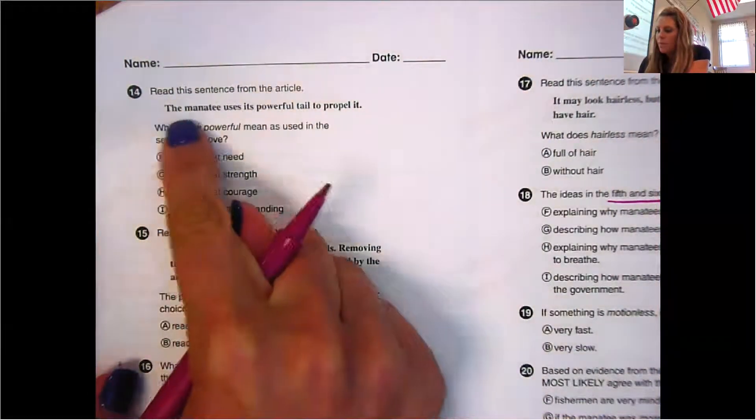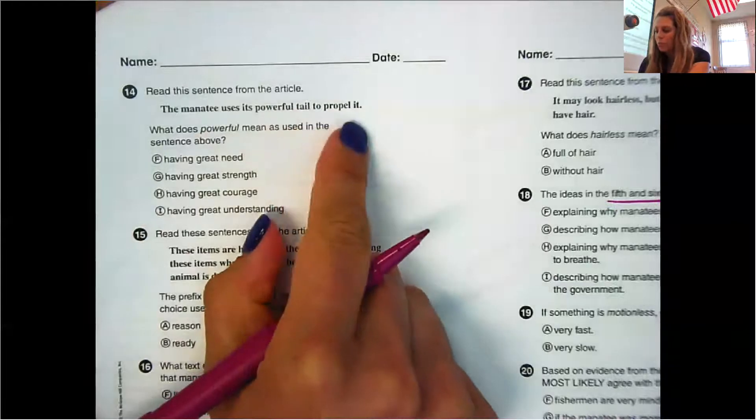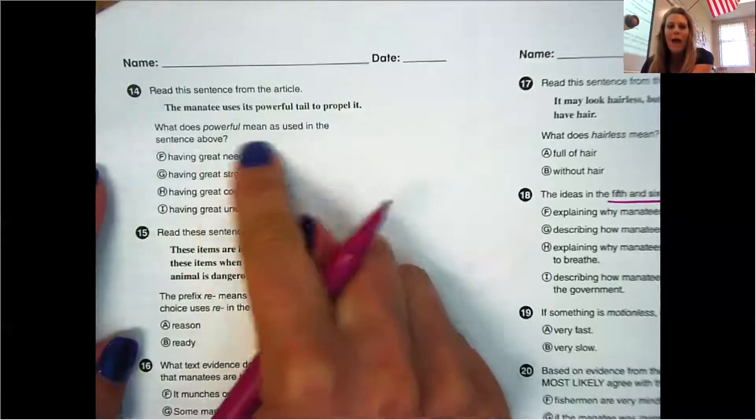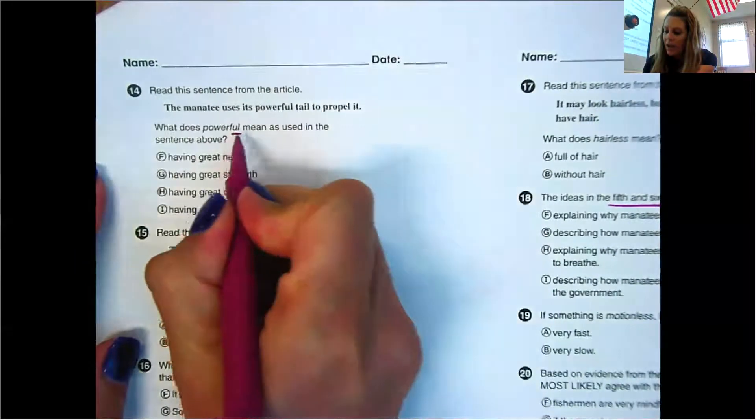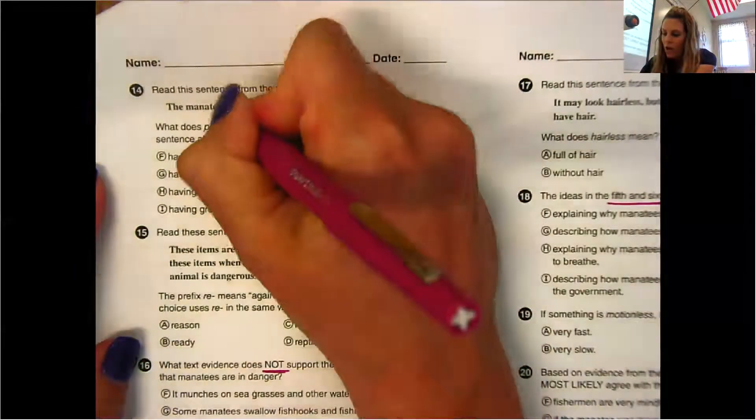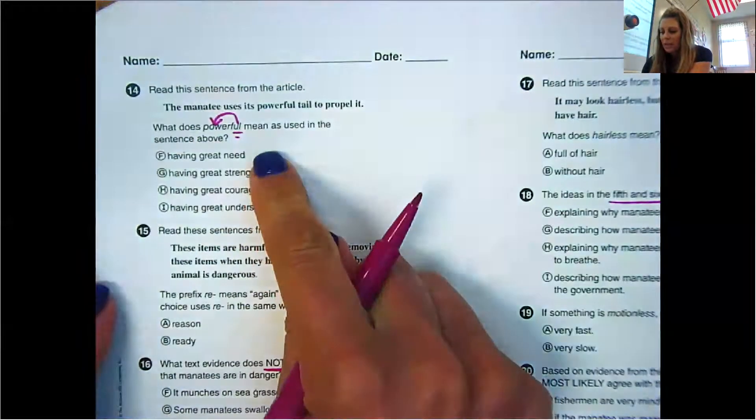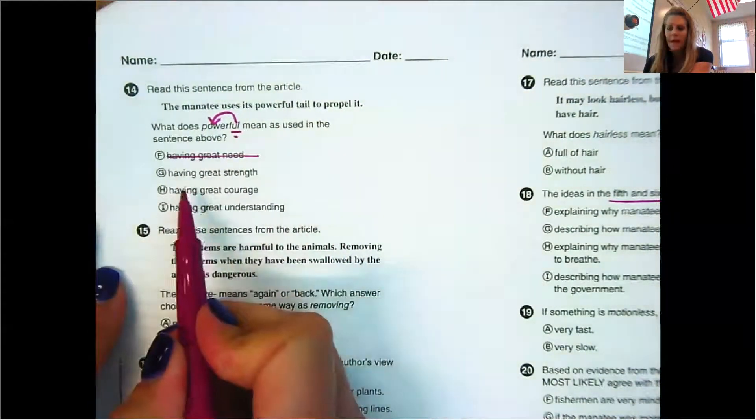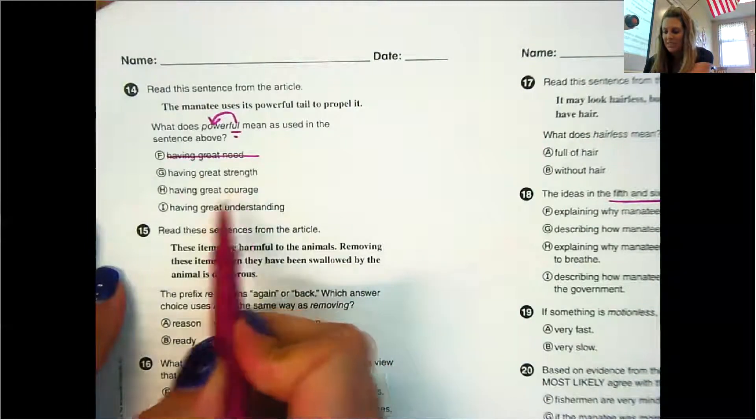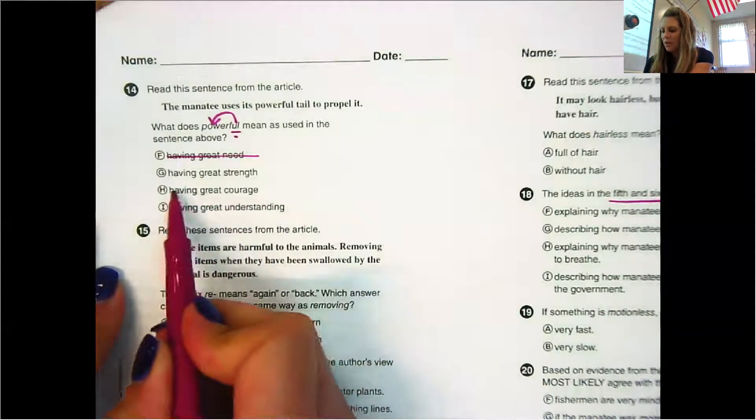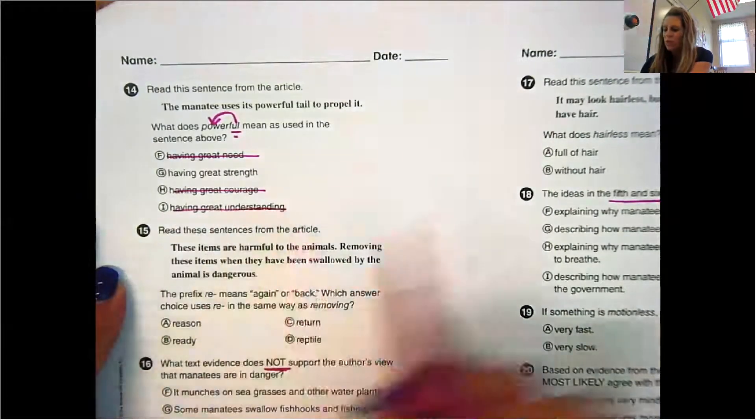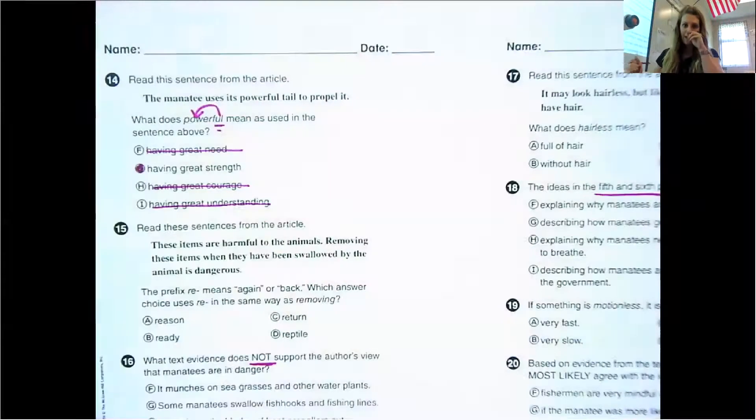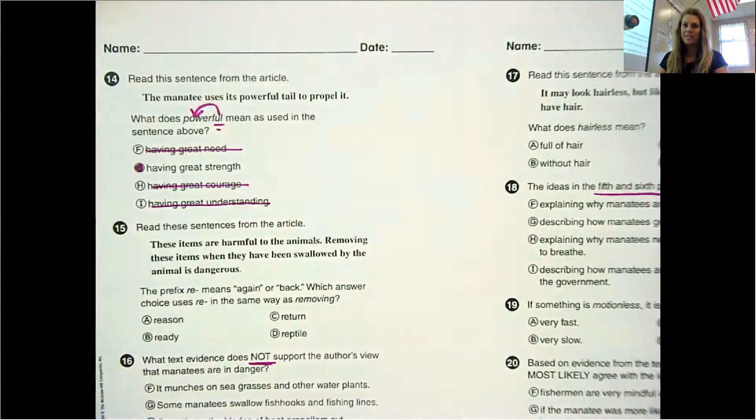All right, read this sentence from the article. The manatee uses its powerful tail to propel it. What does powerful mean as used in the sentence? All right? Well, powerful, we know powerful has a suffix. Full of power. So if something is full of power, does it have great need? No. Does it have great strength? Yes. Great courage? Probably not. Great understanding? No. So you should have some lines crossed off. That shows me that you were going back and eliminating silly choices or choices that you knew were not correct.